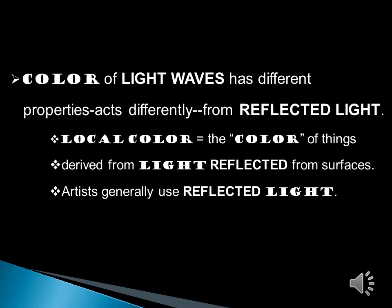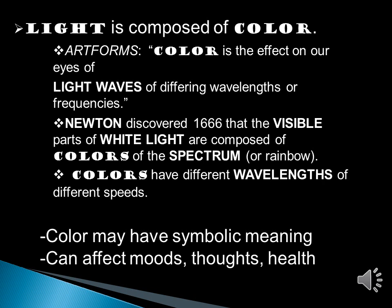The last element of art we're going to be going over in this lesson is color. Even though color is an element itself, it cannot exist without light, so we're still going to be talking about light in the context of color. The color of light waves has different properties — it acts differently from reflected light. Local color is the color of things, derived from light reflected from surfaces. Artists generally use reflected light in their work. Light is composed of color — according to our text, color is the effect on our eyes of light waves of differing wavelengths or frequencies. Newton discovered in 1666 that the visible parts of white light are composed of colors of the spectrum or rainbow. Beyond the technical aspects, color may also have symbolic meaning and it can affect moods, thoughts, and your health.